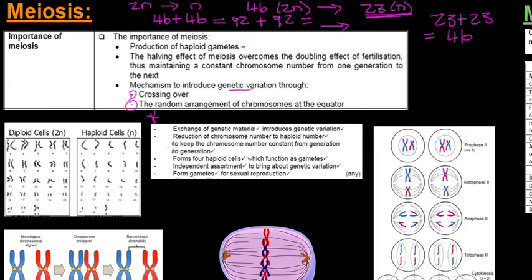This block of information at the bottom is taken from an old exam paper memo and shows the importance of meiosis. It covers: the exchange of genetic material that introduces genetic variation through crossing over and random arrangement; the reduction of chromosome numbers to a haploid number to keep the chromosome number constant from generation to generation; it forms four haploid cells which function as gametes; there is independent assortment to bring about genetic variation; and gametes are formed for sexual reproduction.